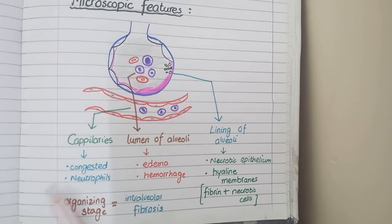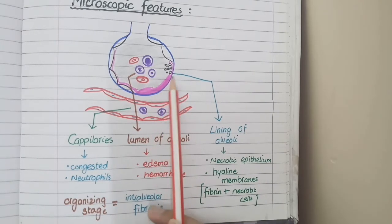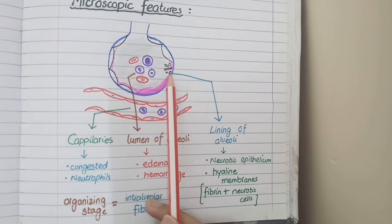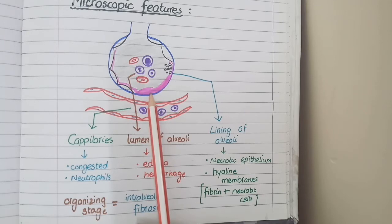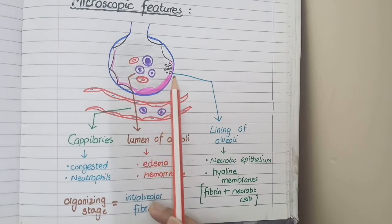Secondly, as the lining of alveoli is being damaged, you will see necrotic epithelial cells. And you will see hyaline membranes lining the alveoli which are highly characteristic of acute respiratory distress syndrome.